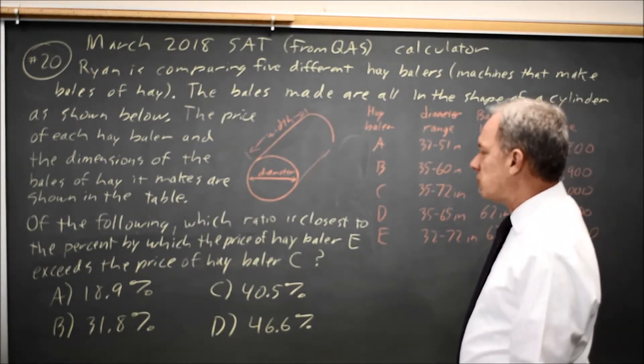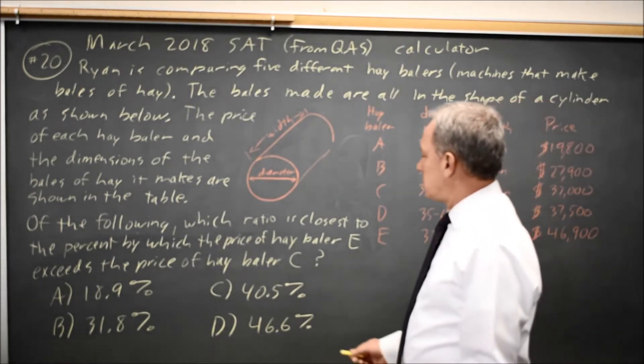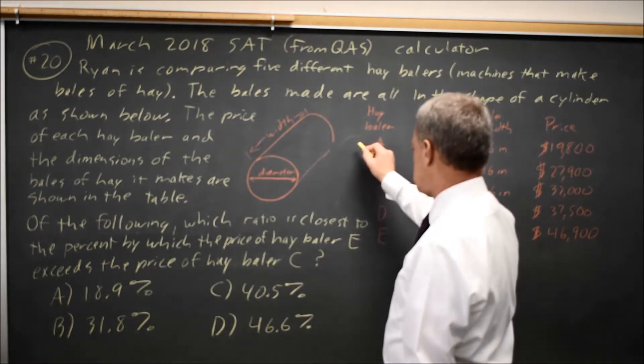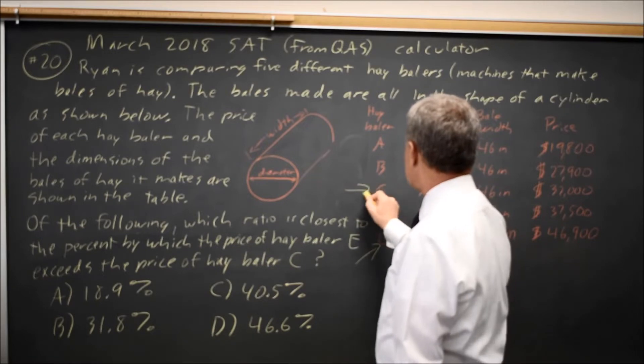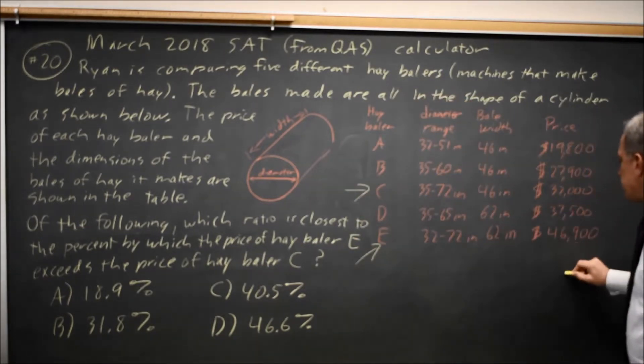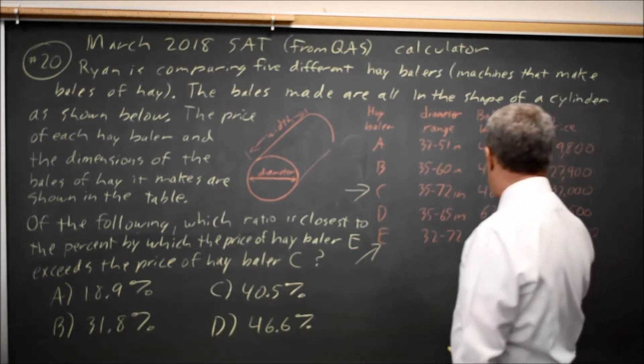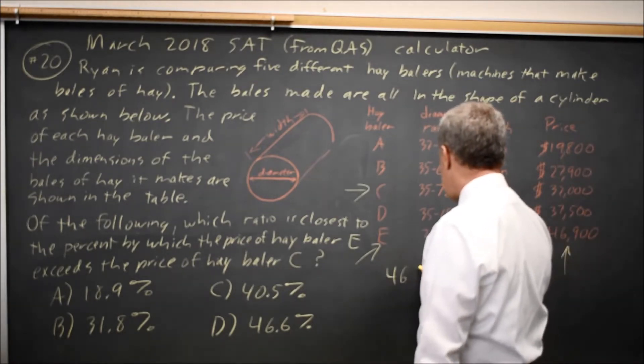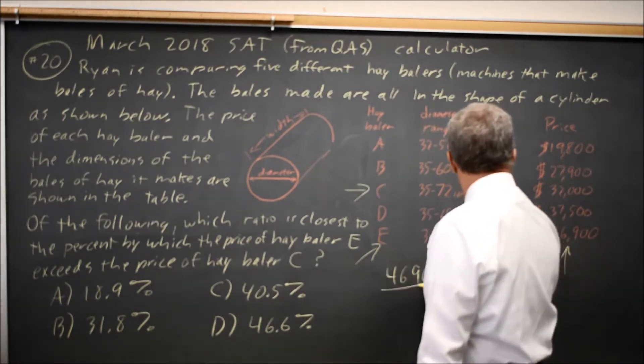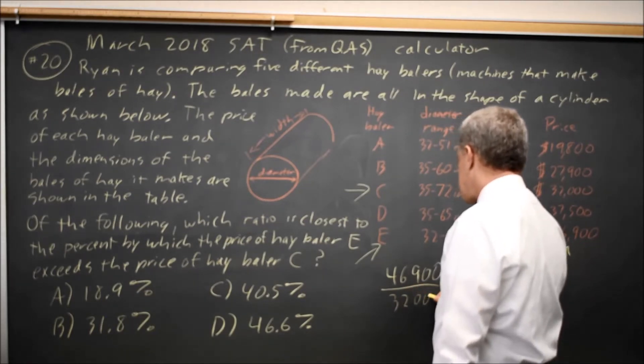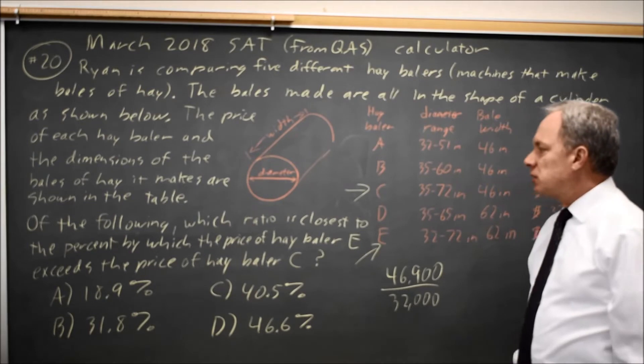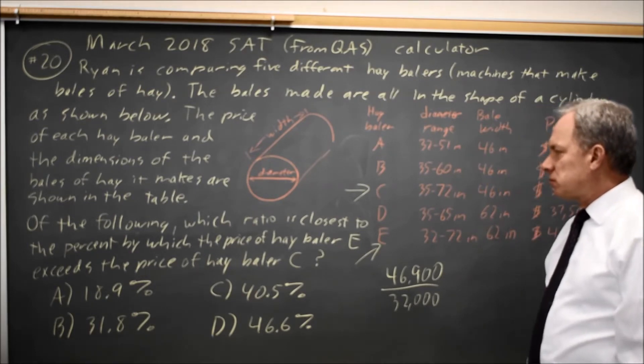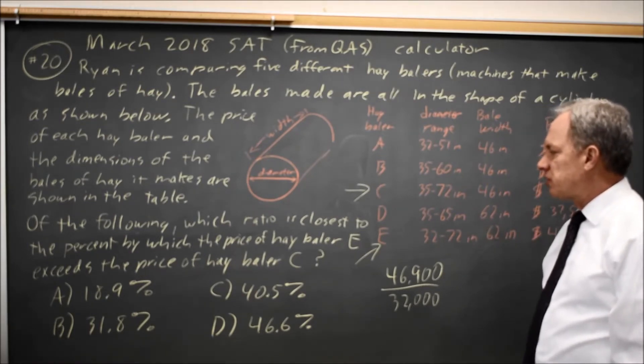Specifically they're asking for the ratio of the price of hay baler E to the price of hay baler C, so that's this column for price and it's E over C, which is 46,900 over 32,000. They're specifically asking the ratio which is closest to the percent by which the price of E exceeds the price of C.